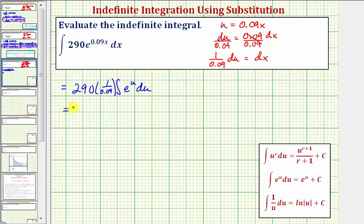So the antiderivative is going to be 290 divided by 0.09 times e to the u, where u is 0.09x, plus c. So this is our antiderivative. And our homework system will accept it in this form here.